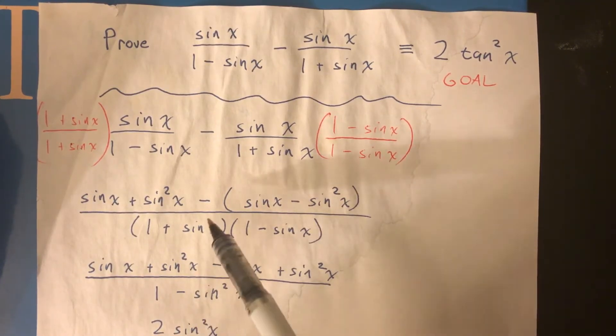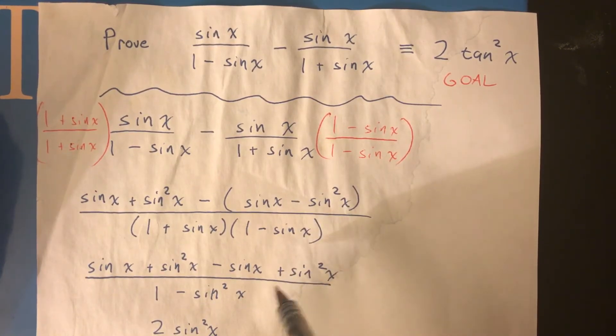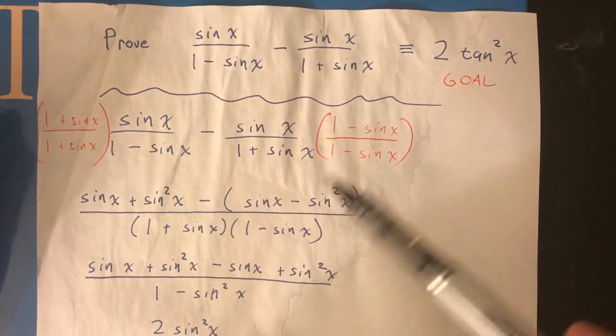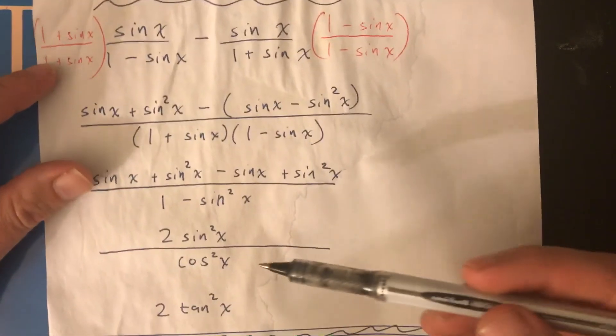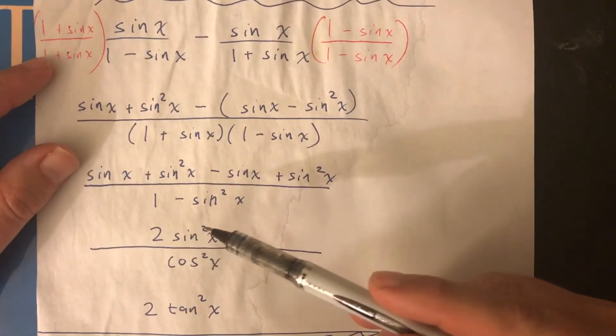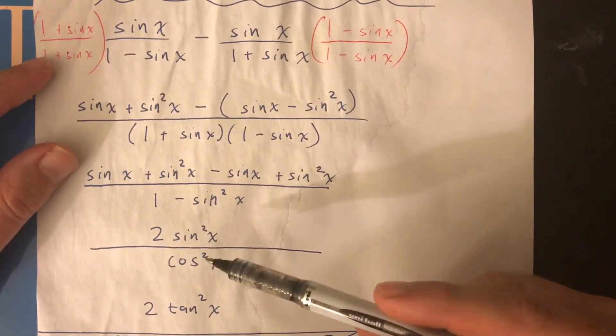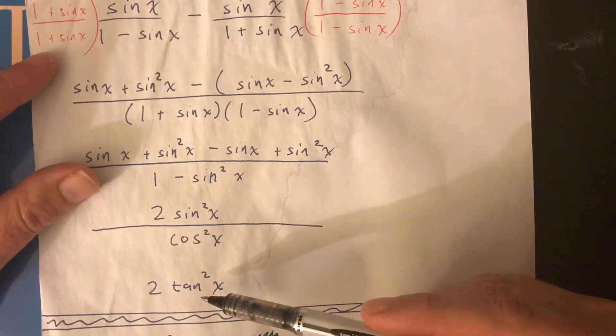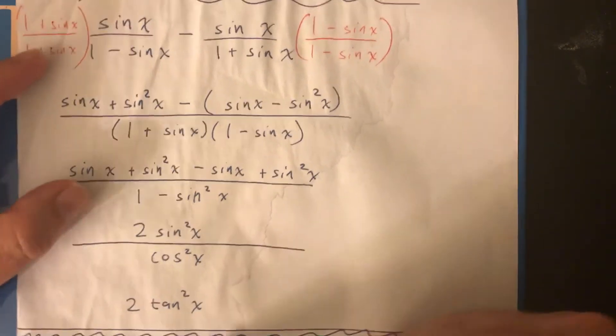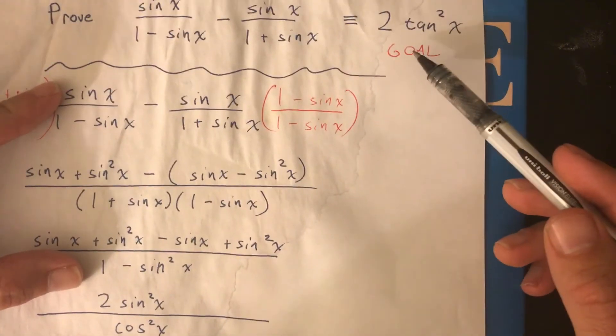On the top, once you change this sine here from minus to a plus, we can combine like terms. There's a sine x, there's a minus sine x, it goes away. Sine squared, sine squared, hey, what do you know? You can combine those and get 2 sine squared x. Sine squared over cos squared, that's the same thing as tan squared, and we're done. We reached our goal.